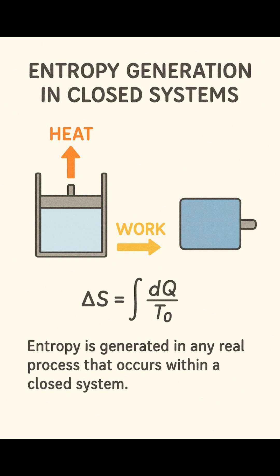In the image, you can see a piston-cylinder system. When heat is added to the gas, it expands and does work on the surroundings. But because the process isn't perfectly efficient, some energy becomes disordered, and that's what we call entropy generation.